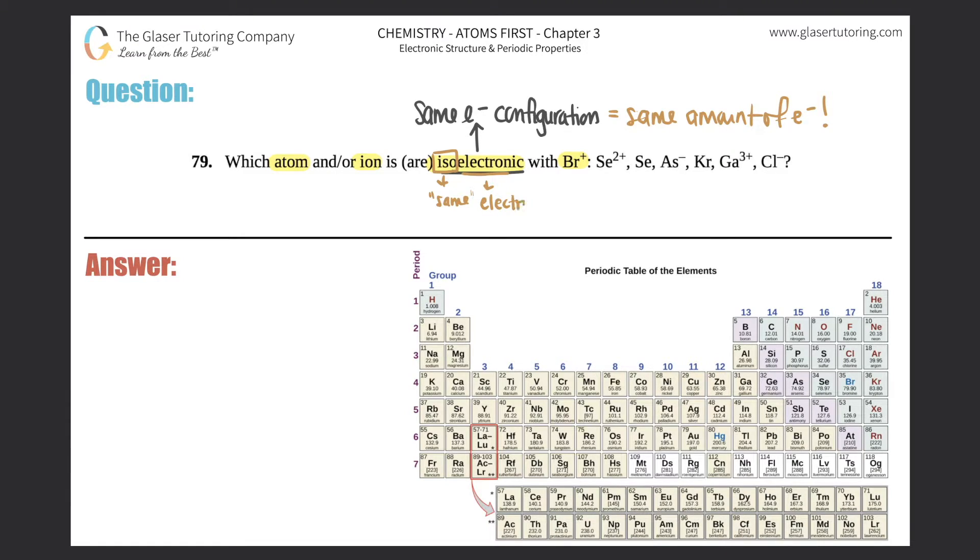Now they're asking for which ones are isoelectronic with Br+. So let's just find out how many electrons Br+ has. Remember, plus means that you actually lost electrons. If you're a minus charge, you actually gained electrons because electrons are negative.